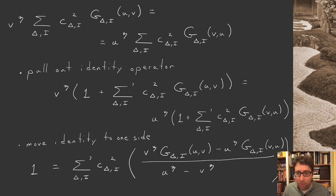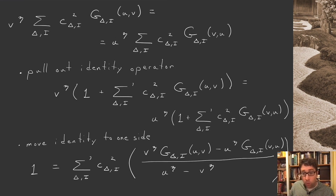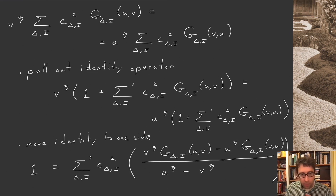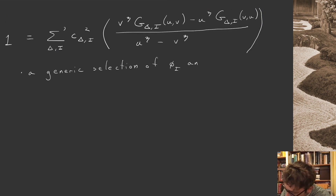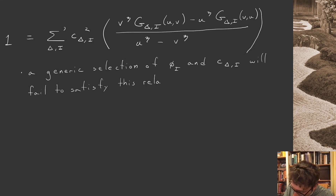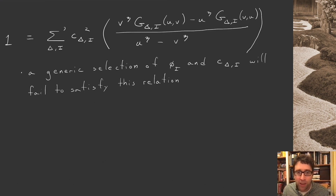Let's pause and think about what this means. The first comment is that a generic selection of primary operators and three-point function coefficients c_{delta_i} will fail to satisfy this relation. If you just pick your favorite conformal primaries and three-point functions and plug them in — with all the g_{delta_i}'s fixed — you won't get one out of this expression. Your generic candidate CFT defined this way will fail to be a consistent CFT.